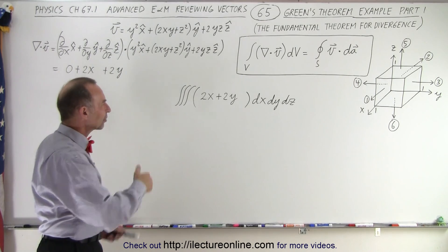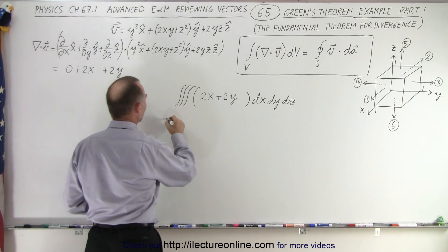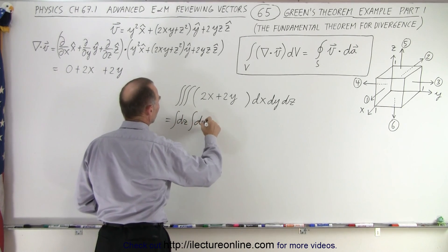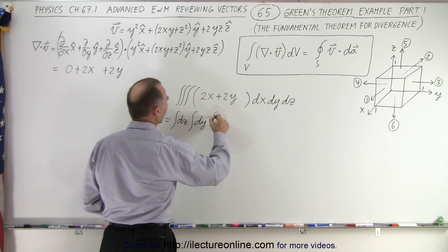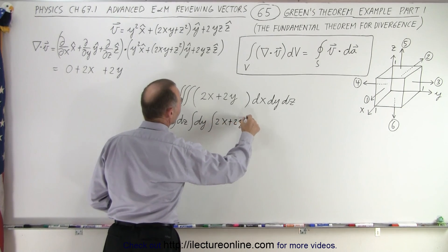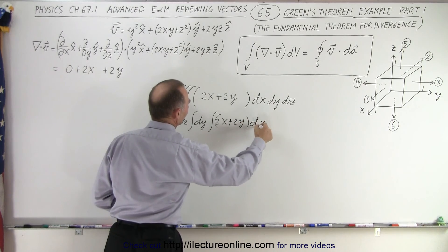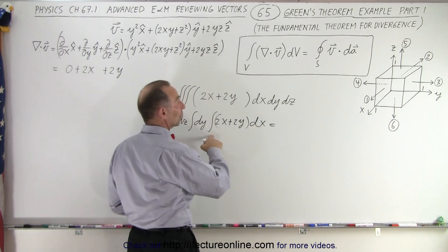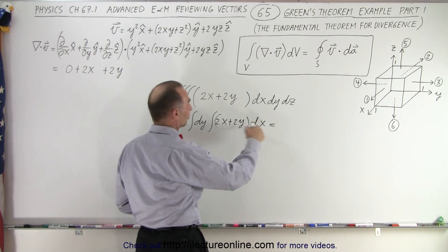So let's integrate the x component first. So this can now be written as the integral over dz times the integral over dy times the integral of 2x plus 2y times dx. So if we do that we get the following and of course the limits of integration over dx will be from zero to one.